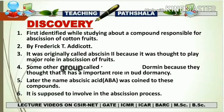Abscission means the falling off. Abscisic acid was first identified when it was seen that there is some kind of compound responsible for the falling off of cotton fruits from a plant. It was originally called abscessin II because it was thought to play a major role in the abscission of fruits.